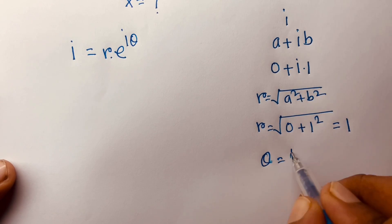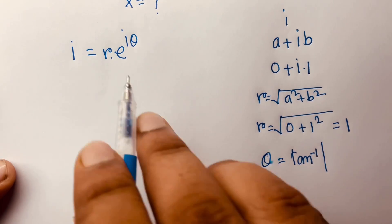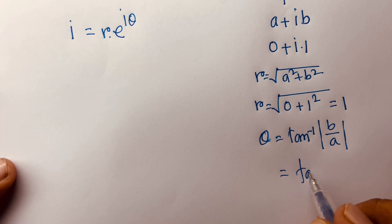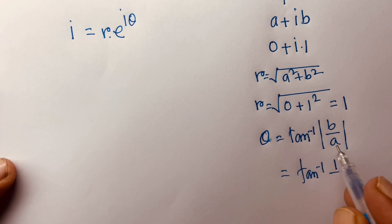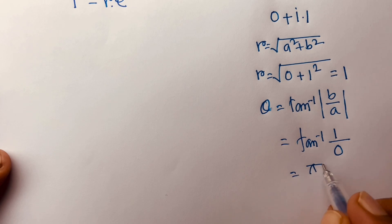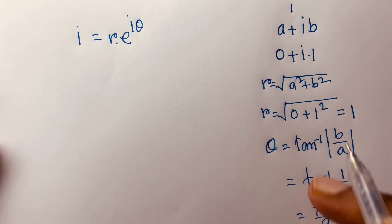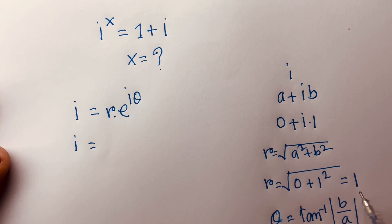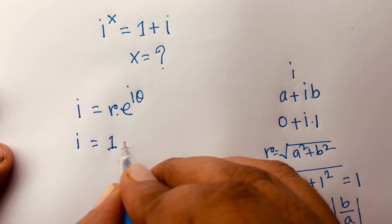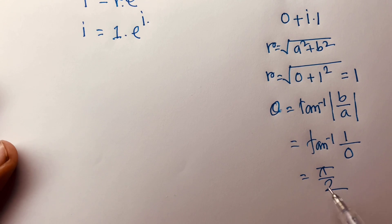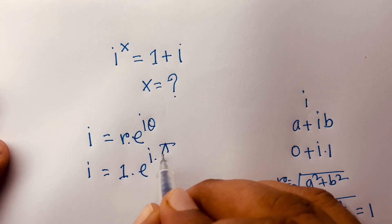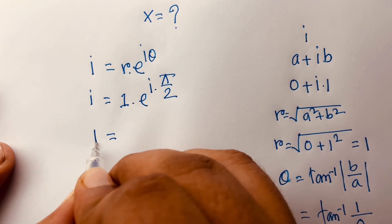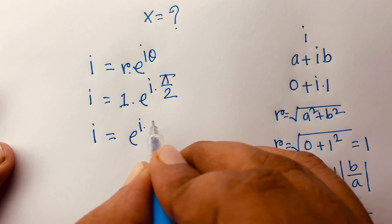And we know that theta is equal to tan inverse of b over a. So theta equals tan inverse of 1 over 0, which gives pi over 2. Putting both values together, i is equal to r·e^(iθ), so i equals 1 times e to the power i times pi over 2.